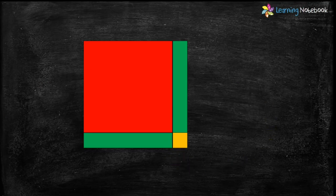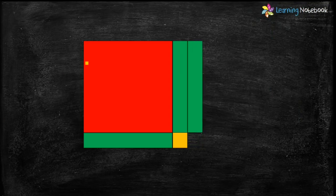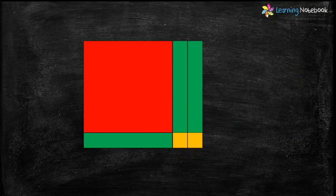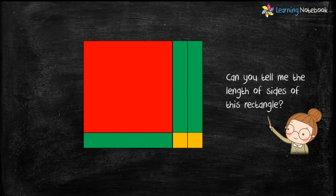Students, now we are left with one green rectangle and one orange square. Let's arrange them in the same way. Students see, now we have arranged all the shapes in the form of a big rectangle. Can you tell me the length of sides of this rectangle?